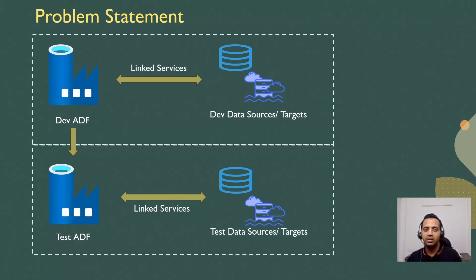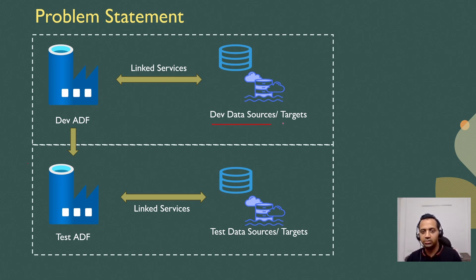Hello and welcome to CloudFerrors. This is part 3 of setting up CI/CD for Azure Data Factory using GitHub Actions. In part 2 of this series we covered a problem statement where we have a dev data factory and a test data factory. The dev data factory points to our dev data sources and targets, and when we move components from dev to test data factory, they should automatically start pointing to our test data sources and targets.